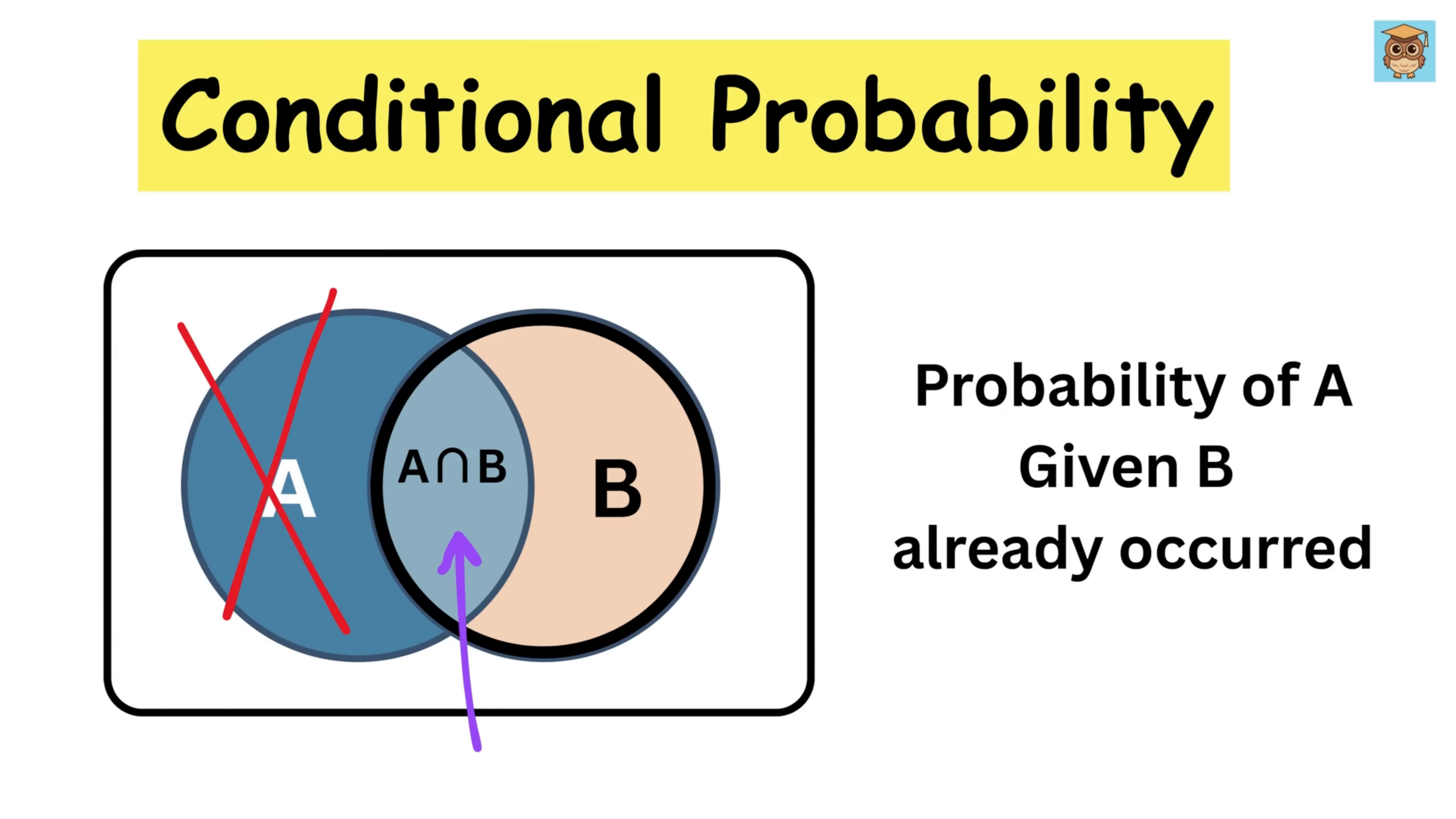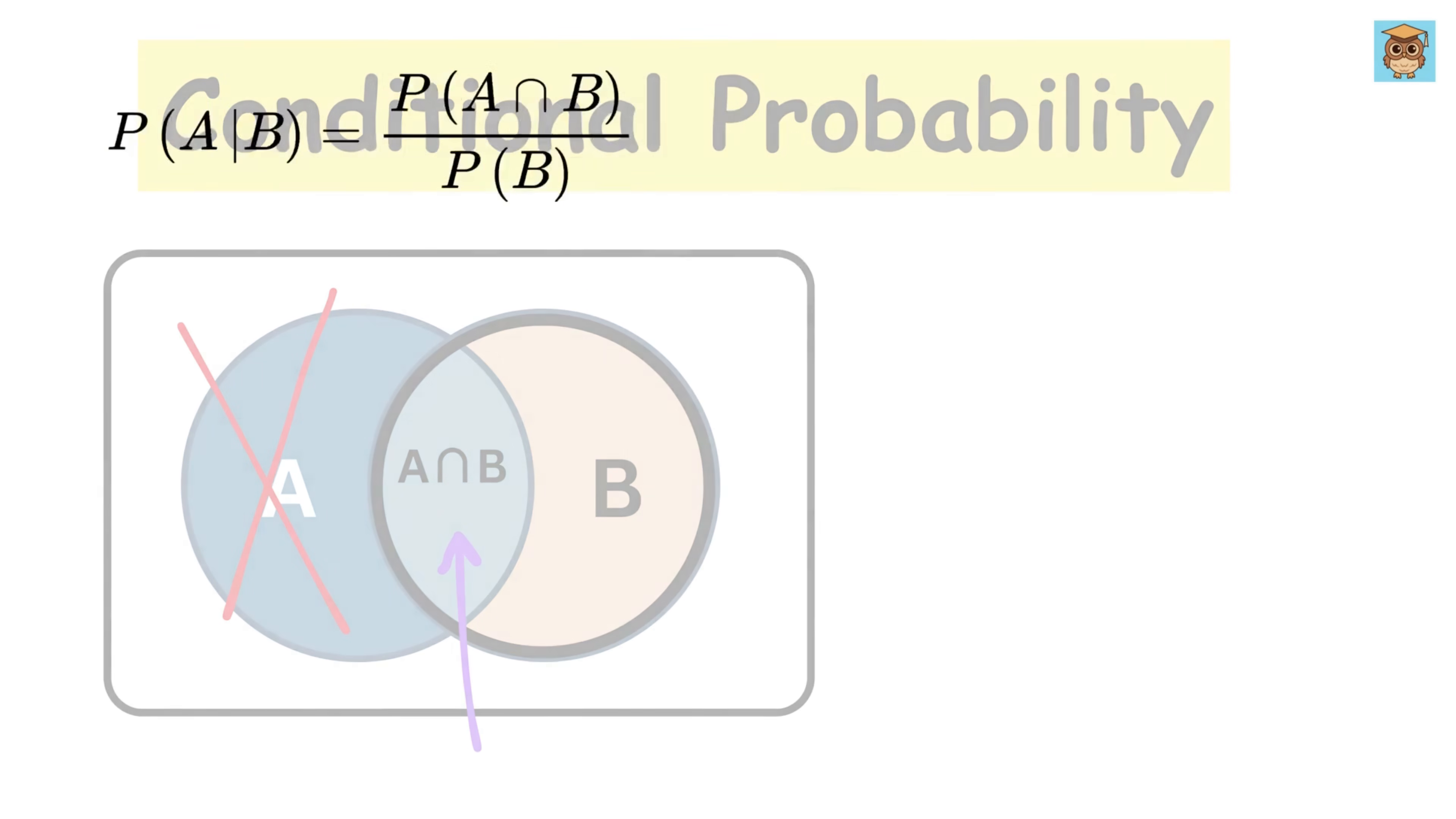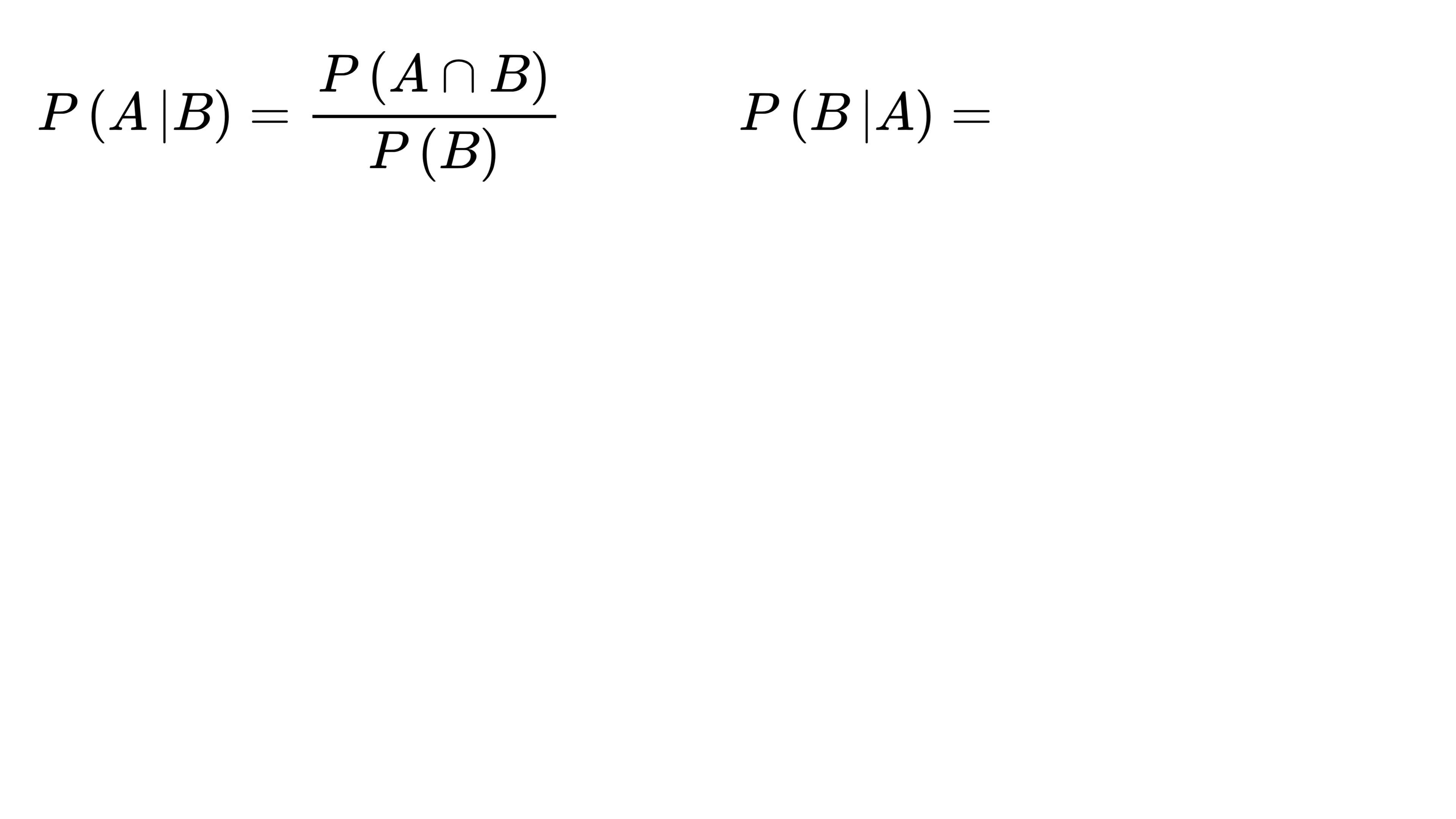Therefore, the formula will now be simple. The conditional probability of A given B, which we represent like this, is equal to the probability of both A and B happening together, divided by the probability of just B happening, and that's it. Likewise, the conditional probability of B given A, which we represent like this, is equal to the probability of both A and B happening together, divided by the probability of just event A.